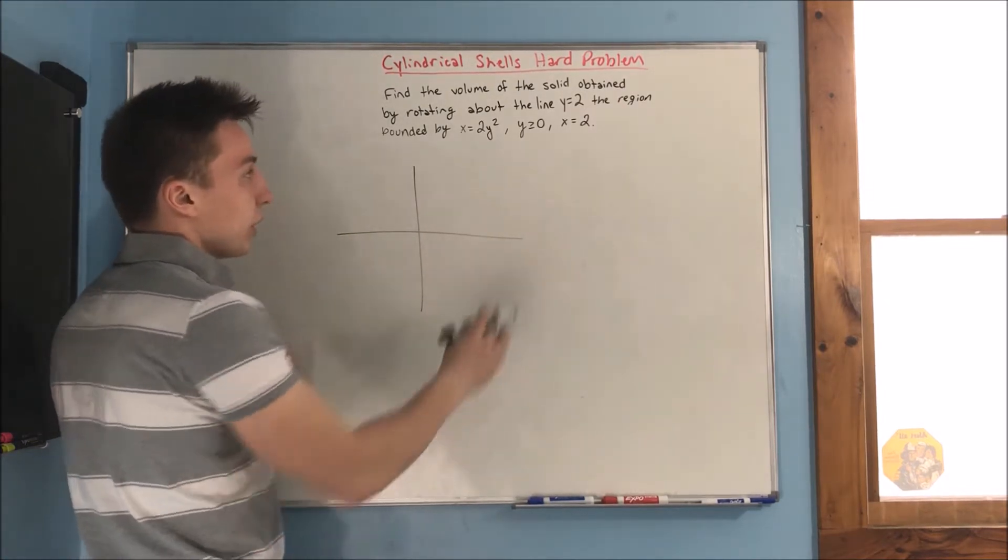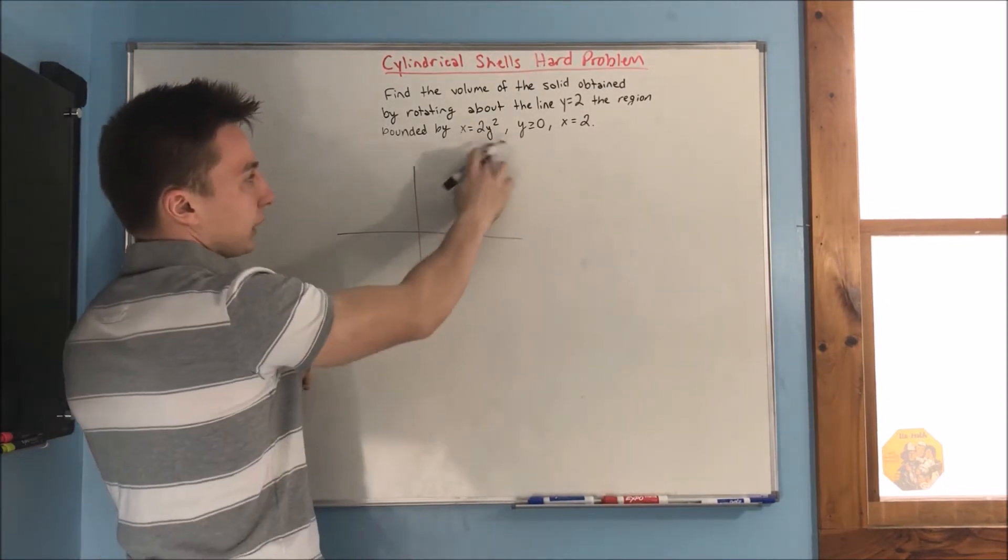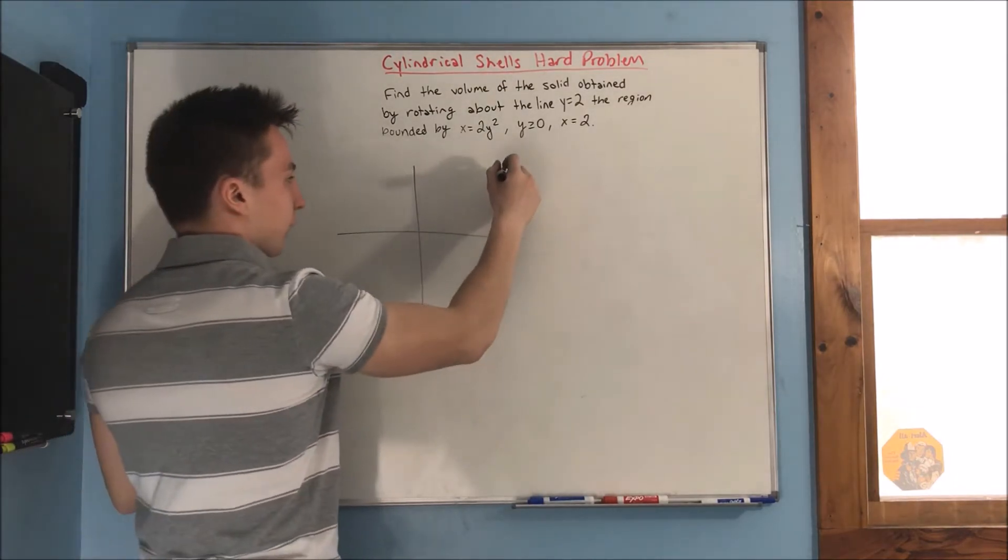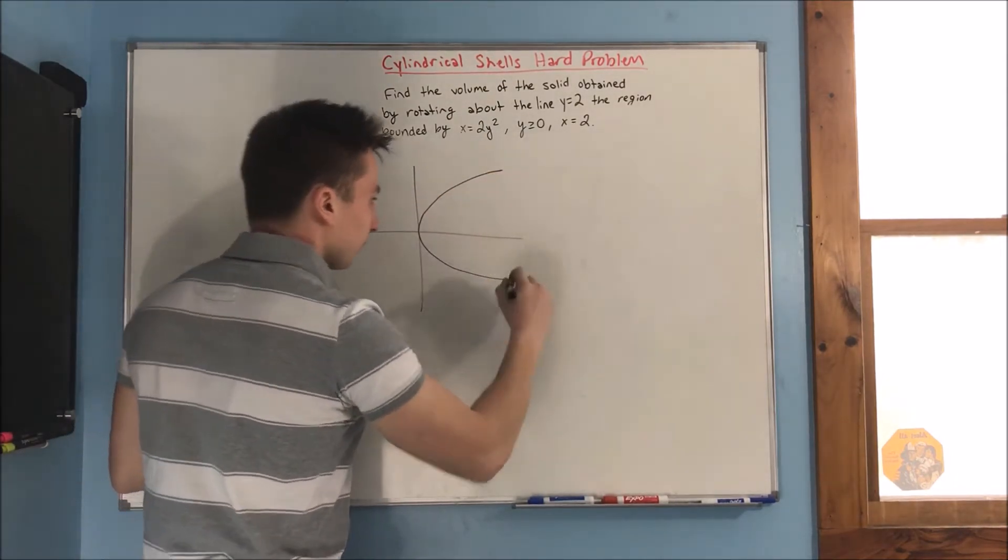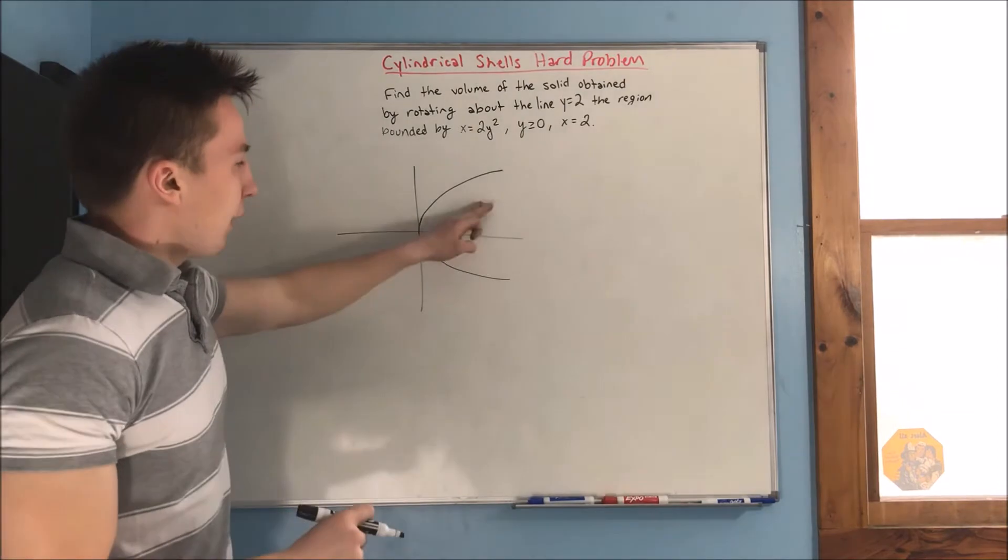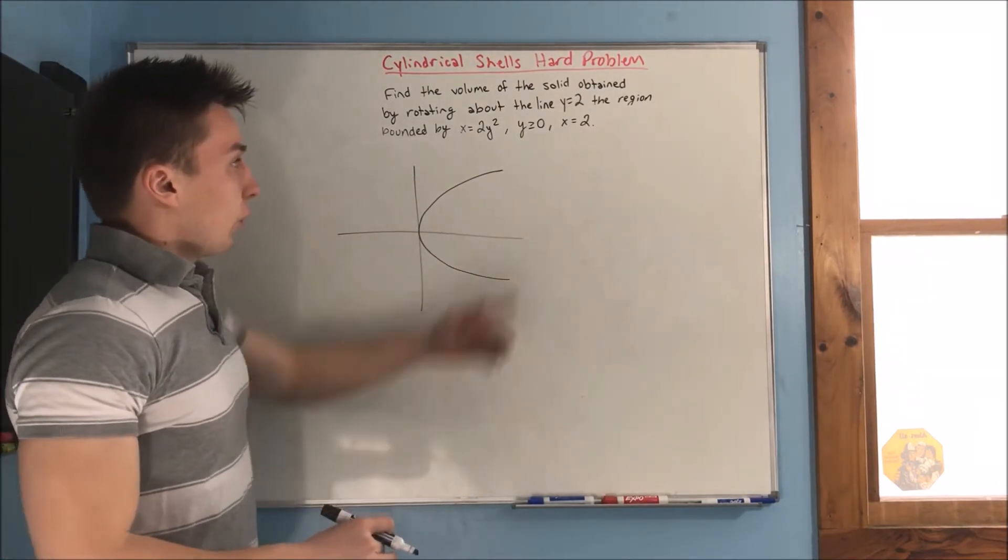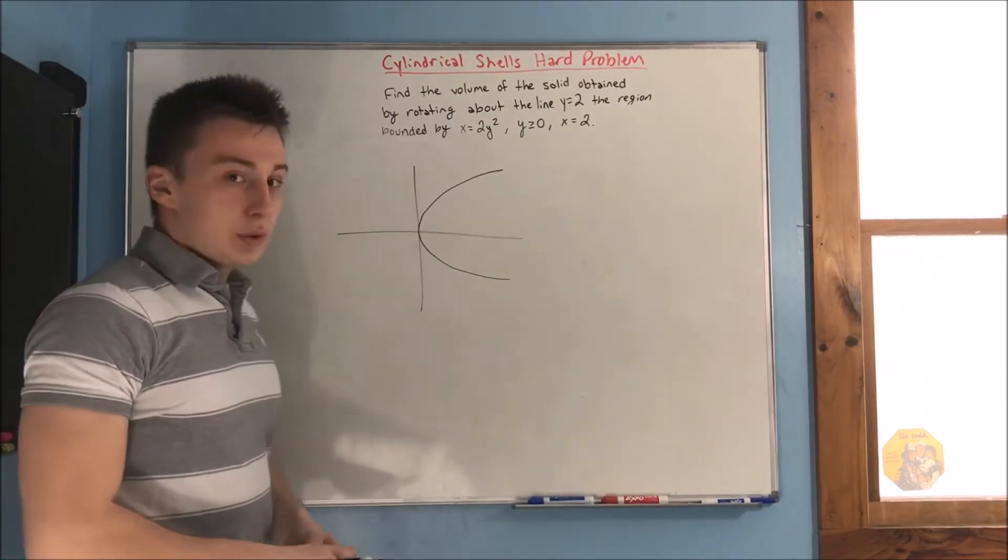Let's start off here. x equals 2y squared, that's going to look something like this. Alright, so it's going to be a parabola that opens sideways, alright?